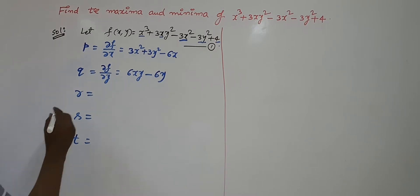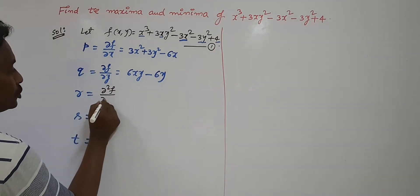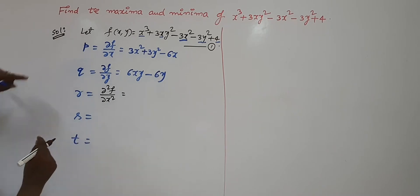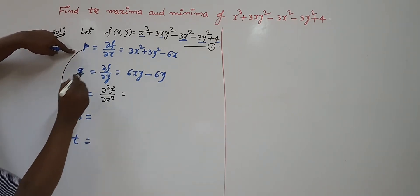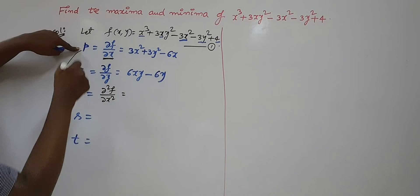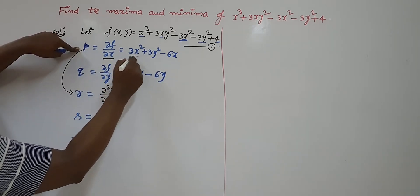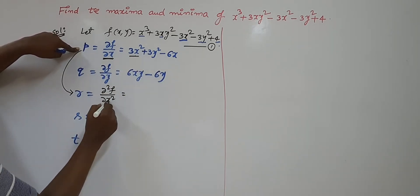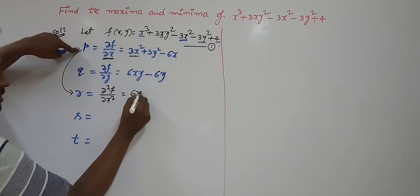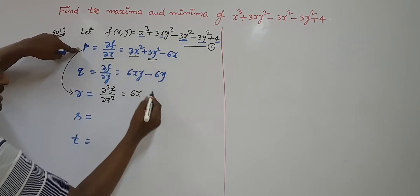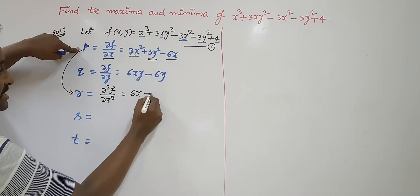Now r = ∂²f/∂x². We already have the first order partial derivative p. For this, take another partial derivative with respect to x. The derivative of 3x² with respect to x is 6x. The derivative of 3y² (constant) is 0. The derivative of 6x with respect to x is just 6. So r = 6x - 6.